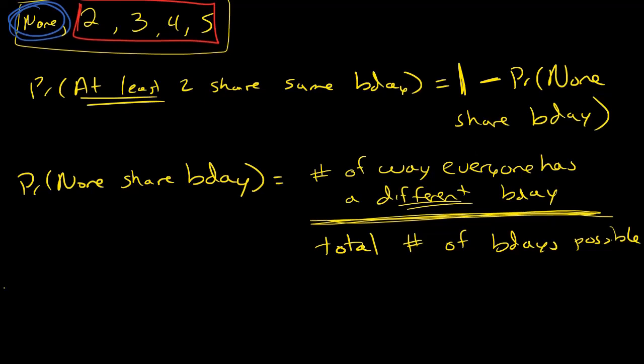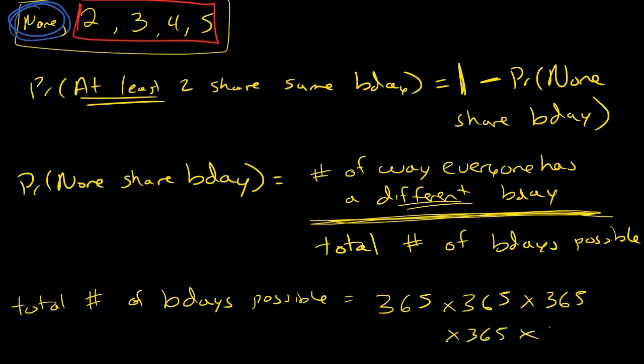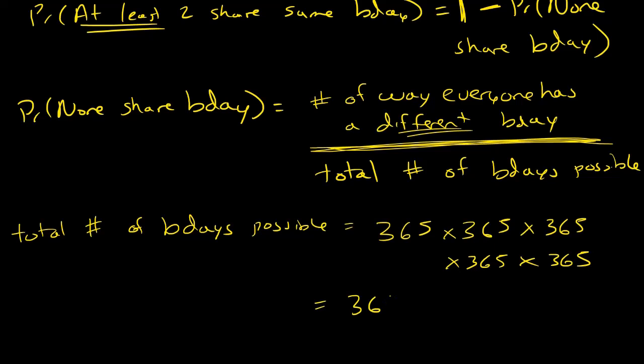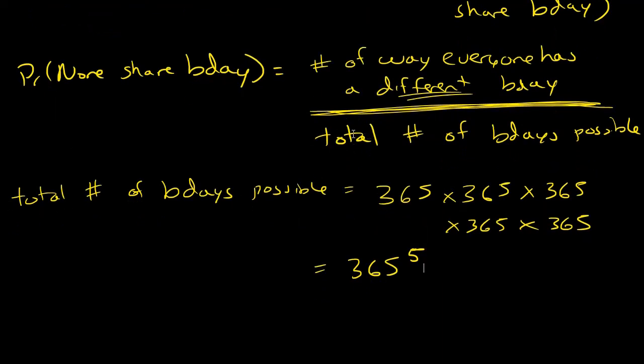First let's start with the denominator—the total number of birthdays possible. This is straight up a multiplication rule counting method where the first person can have any birthday of the 365 days of the year, and so on until we get to the fifth person. We have basically five different parts to this experiment because there's five different people, so this is the same thing as 365 to the fifth power. That's the denominator.